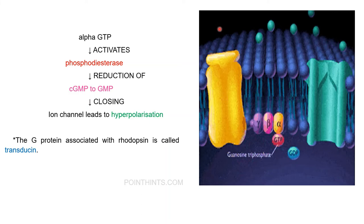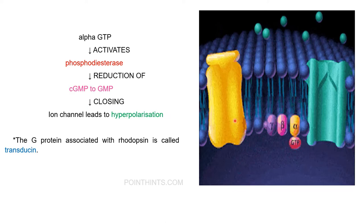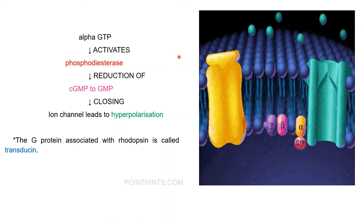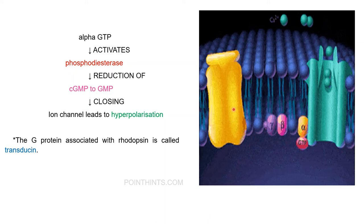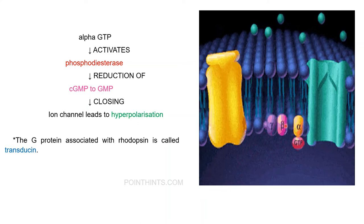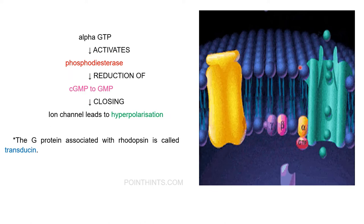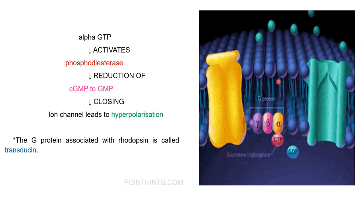When light hits the rhodopsin molecule it becomes activated to form metarhodopsin 2. This activated metarhodopsin activates the G protein present inside the cell, which is generally in an inactivated stage. The complex of G protein along with activated rhodopsin forms the transducin. The activated G protein's alpha subunit with GTP cleaves off and acts on phosphodiesterase, which also acts on the ion channel directly to depolarize the cell membrane by allowing ions from outside the cell to enter.